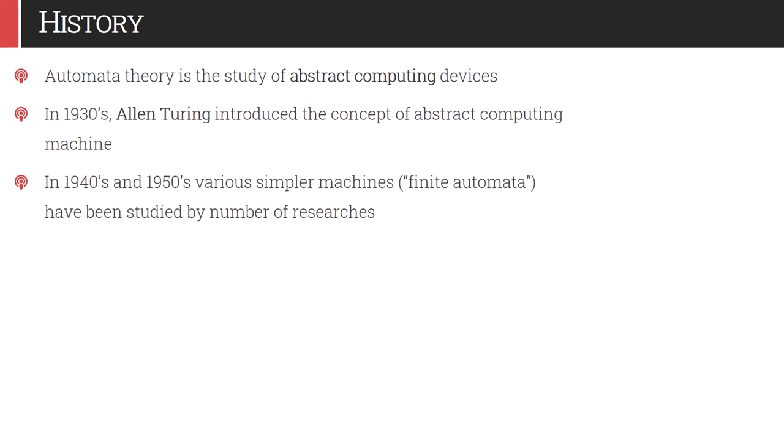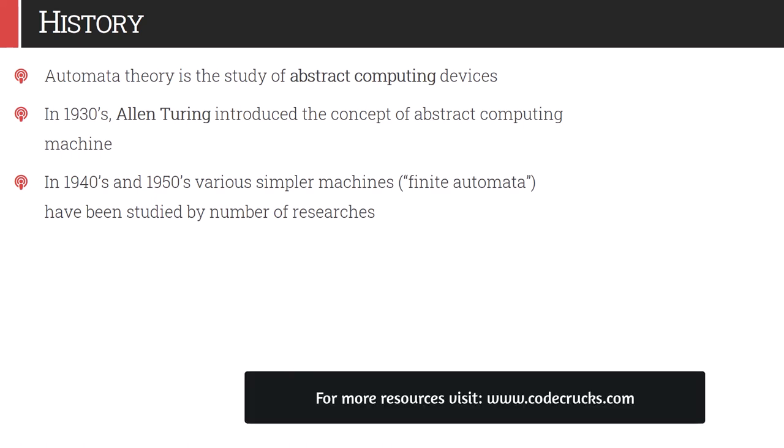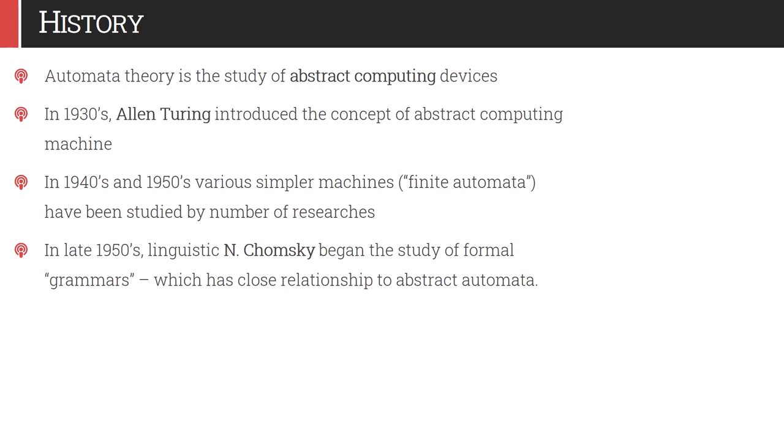In the 1940s and 1950s, various simpler machines — known as automata — were studied by a number of researchers to see what kind of problems we can solve using them. Late in the 1950s, linguist Noam Chomsky began the study of formal grammar. Until then, all study was very informal. Chomsky defined proper grammar for defining language and established the relationship between what kinds of grammars or languages can be accepted by what kinds of automata. That relationship is called the Chomsky hierarchy, which we will study later on.